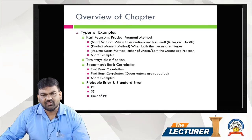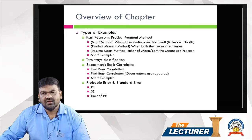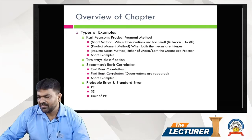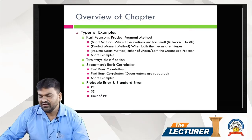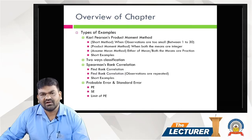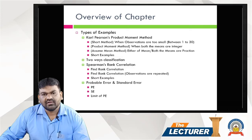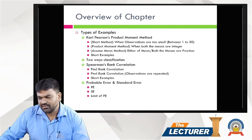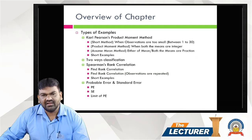Type 3 is Spearman Rank Correlation. We will learn the syllabus covering total base type correlation: first is Karl Pearson, second is Spearman Rank Correlation. Then there are other methods: first, find Rank Correlation; second, find Rank Correlation when observations are repeated. Method 3 is Rank Correlation.